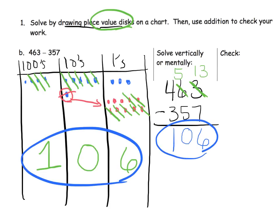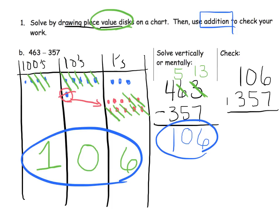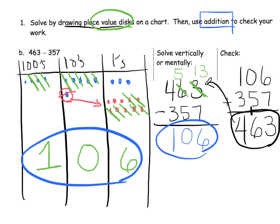Now we need to use addition to check. We take our answer 106 and add 357, hoping to get 463. Six ones plus seven ones is 13 ones, so we write three in the ones column and bundle an extra ten. Zero tens plus five tens plus one ten equals six in the tens column. One hundred plus three hundreds equals four in the hundreds column. Our answer is 463 — exactly what we wanted, so 106 is correct.